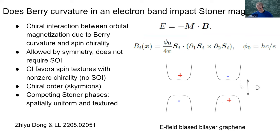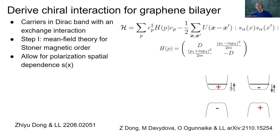The displacement field D has two effects: first, it opens the band gap; second, it flattens the bottom of the conduction band and the valence band, making conditions for Stoner instability more favorable and easier to fulfill. Indeed, in bilayer graphene, over the past two years many groups reported orbital magnetism of Stoner type with several different phases of different polarizations.